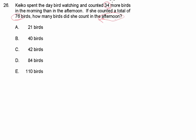She counted 34 more birds in the morning than she did in the afternoon. So, let's let the value of x plus 34 be the number of birds she counted in the morning. x is the number of birds she counted in the afternoon.